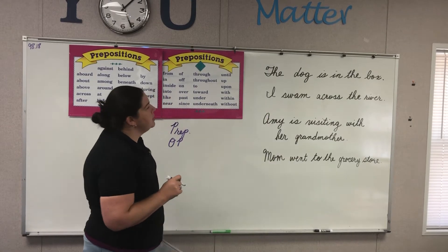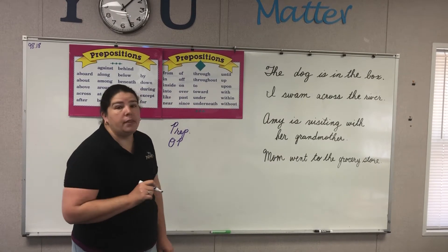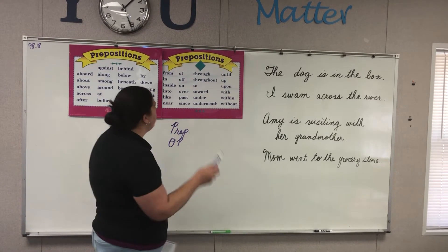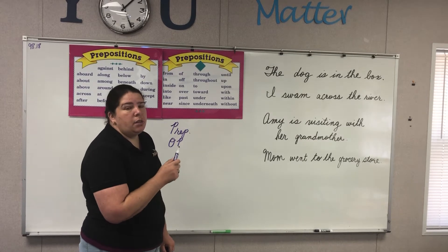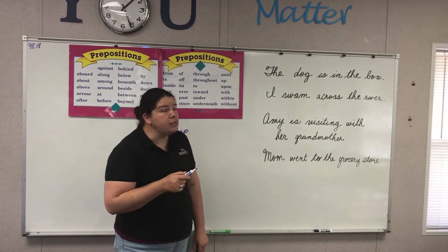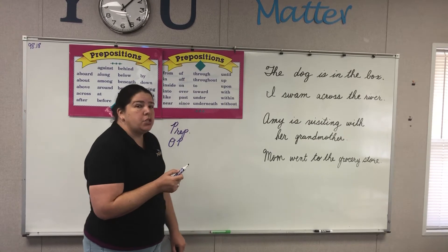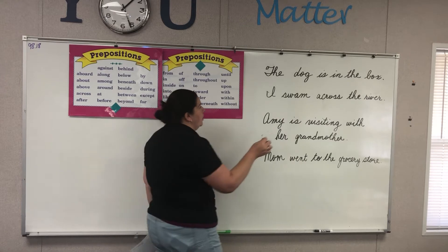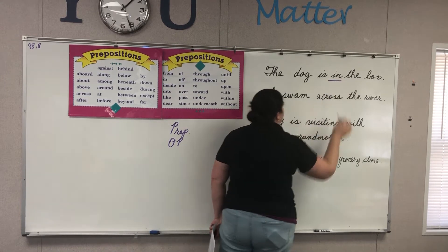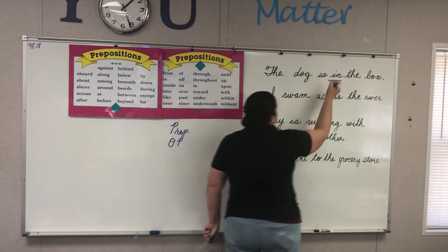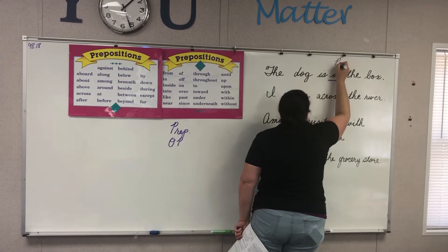Look up here on our board. We have a sentence that says: 'The dog is in the box.' Think about our prepositions and tell me the preposition in the sentence. Which one is the tattletale word? Remember, the preposition is a tattletale word that tells where. In. Very good. In is the preposition. If I asked you to underline the preposition, you would underline 'in.' We label it PREP period.